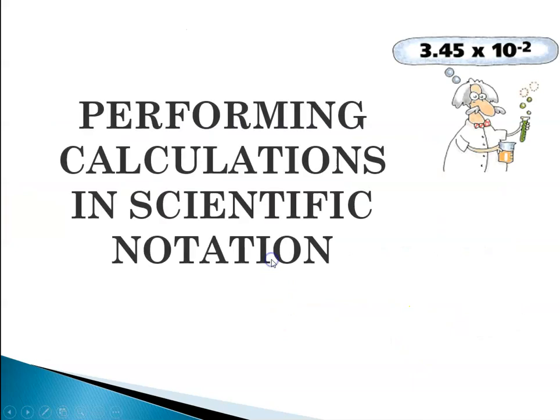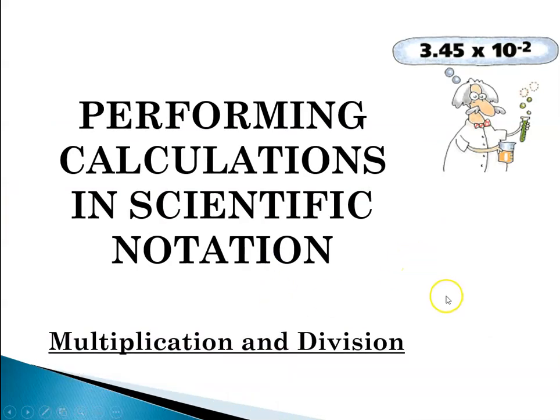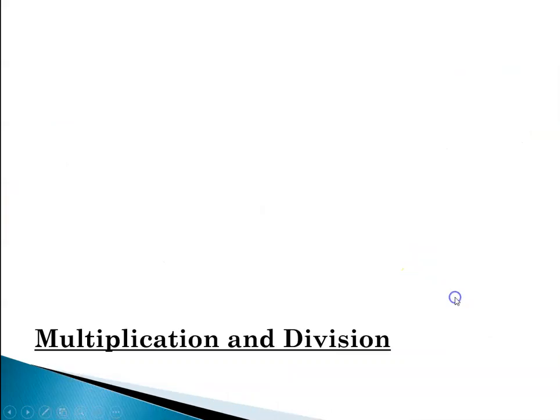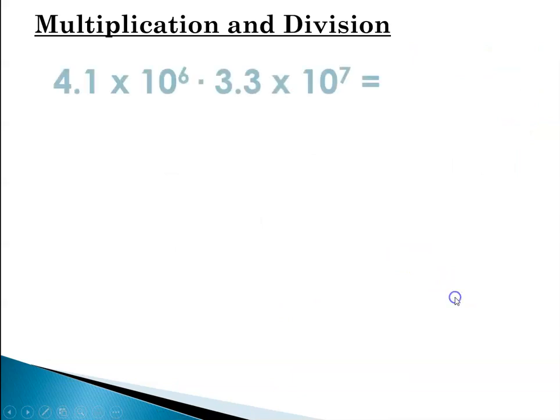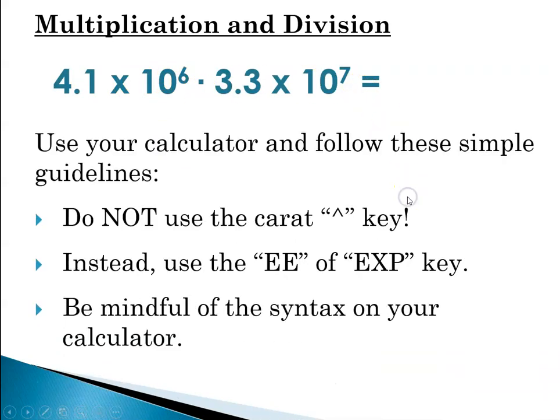Now what about if we're doing multiplication and division? So thankfully we have calculators. So for multiplication and division, given a number like this, 4.1 times 10 to the 6 times 3.3 times 10 to the 7, you're going to use your calculator and follow these simple guidelines.